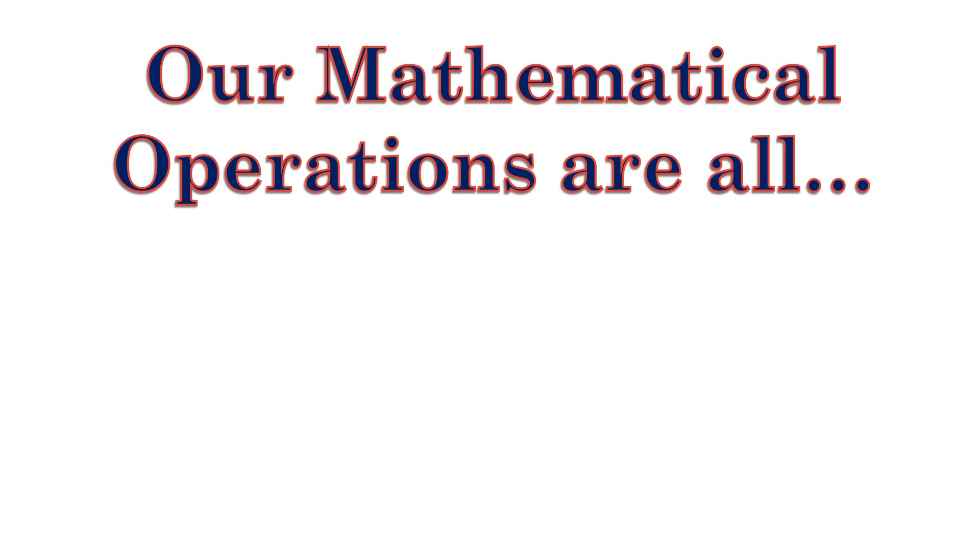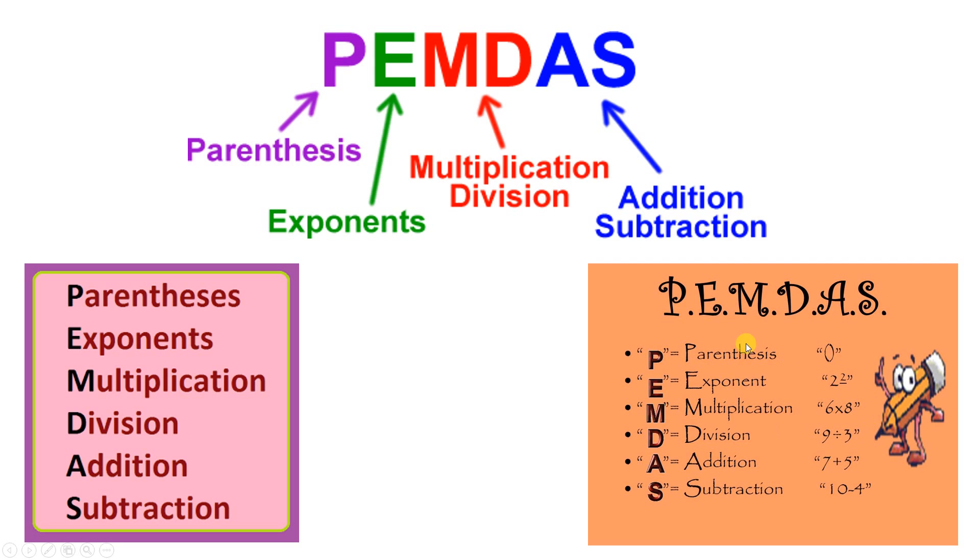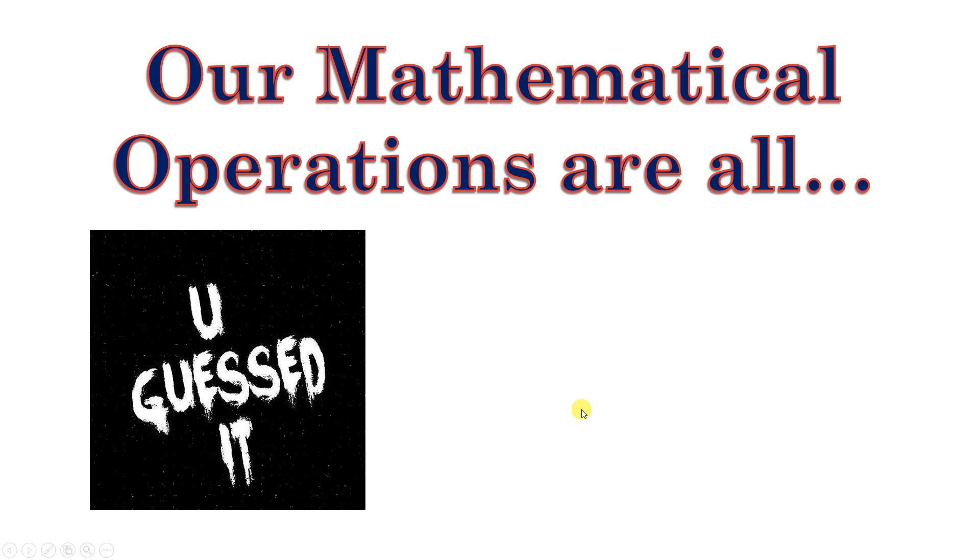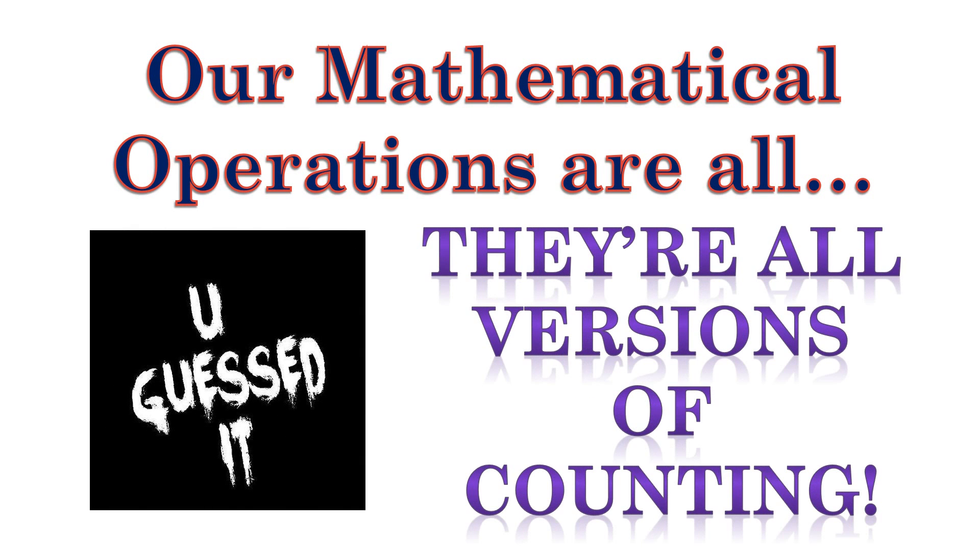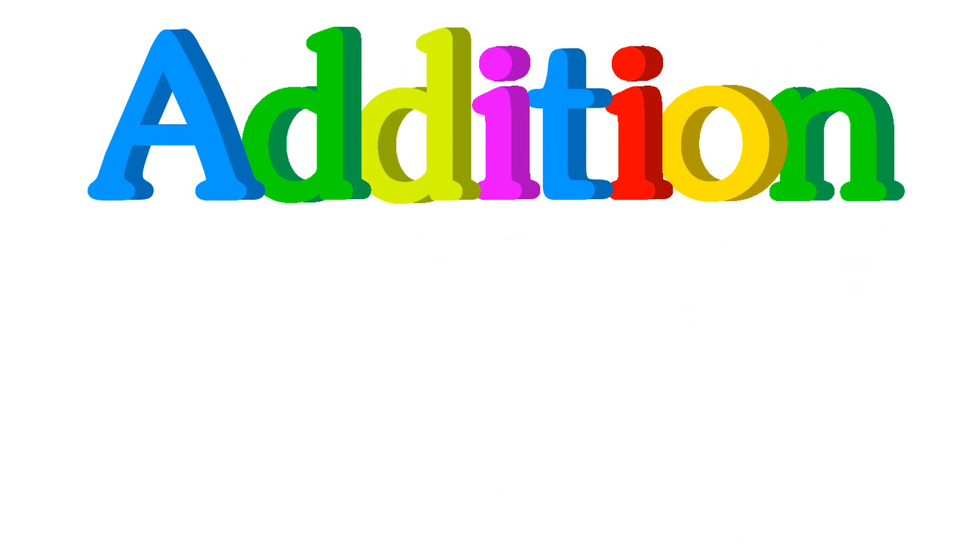Now, all of our mathematical operations, all of these guys, all of them are the same thing. You guessed it, they're all forms of counting. Yep, one, two, three, four, five. They're all versions of counting.